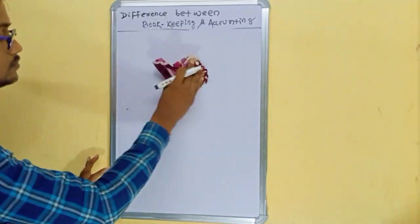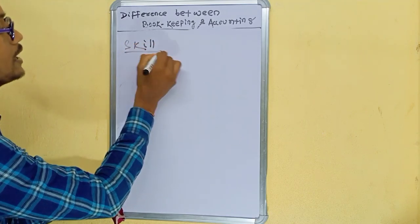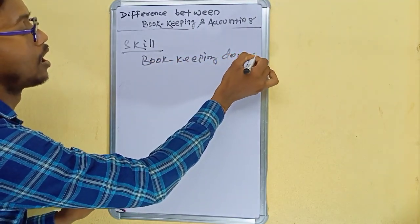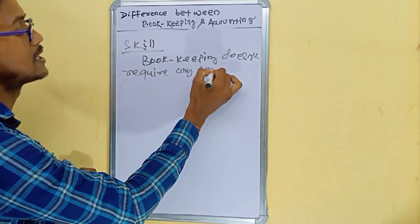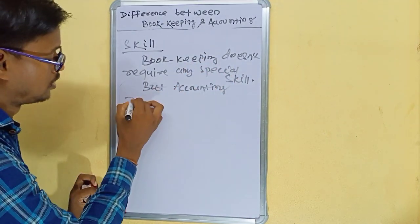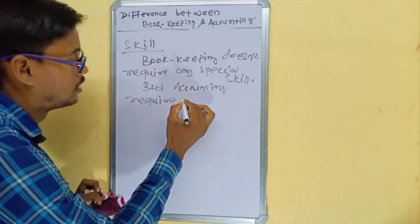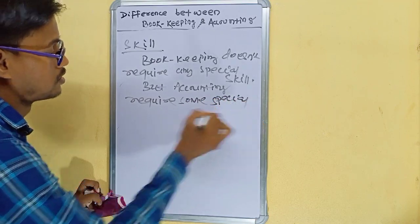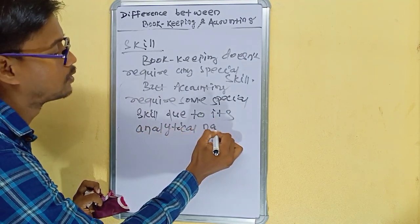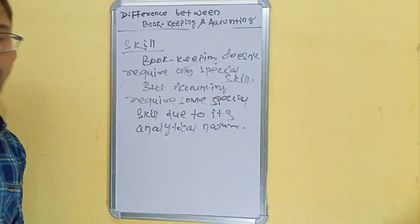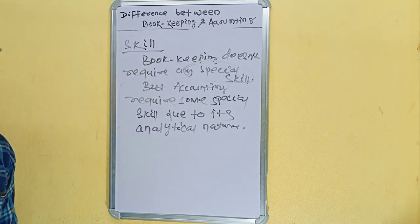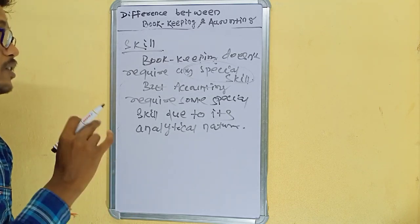The next term is skill. Bookkeeping does not require any special skill. But accounting requires some special skill due to its analytical nature, because it analyzes all the recorded data. So accounting requires some special skills.